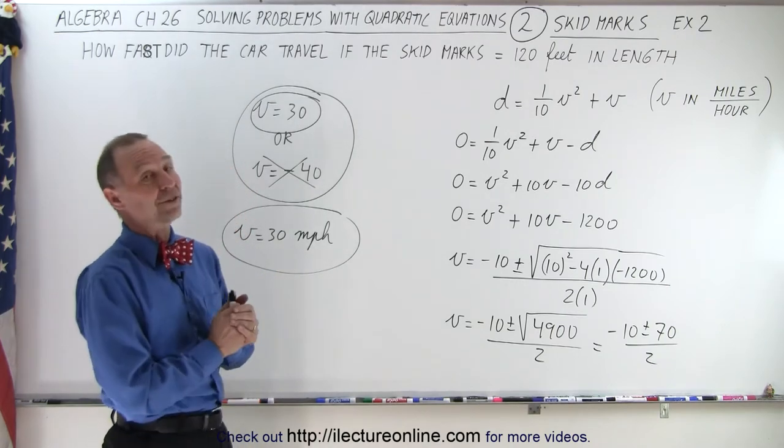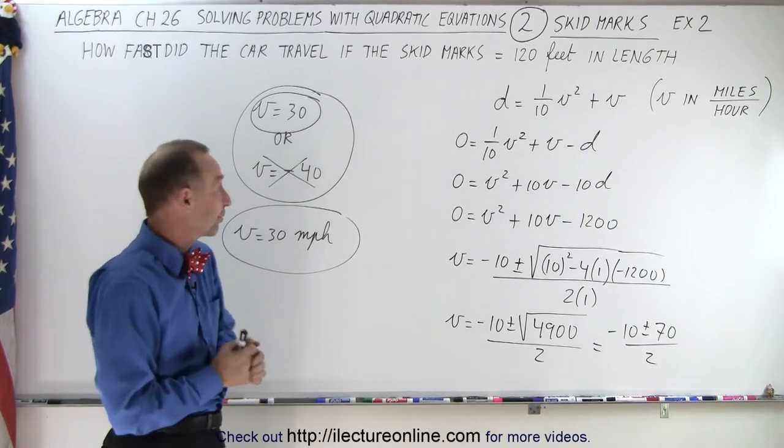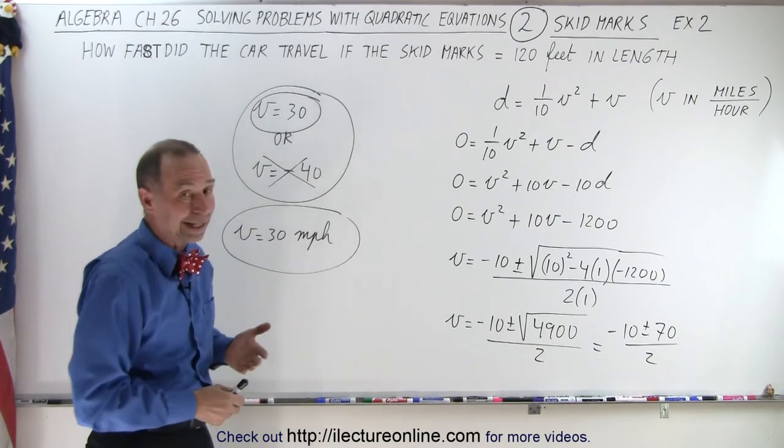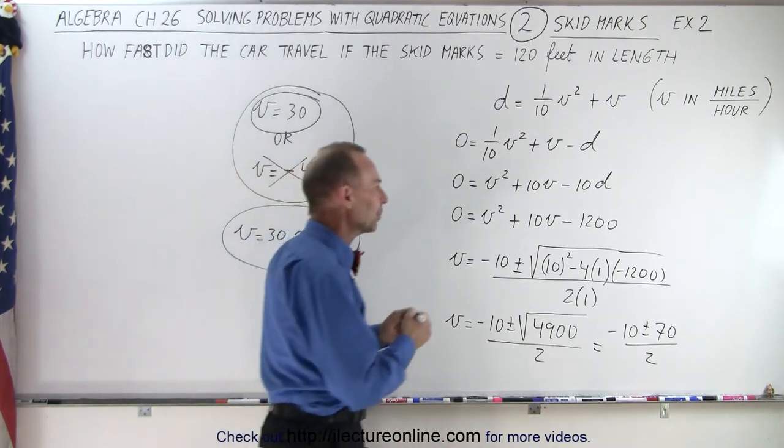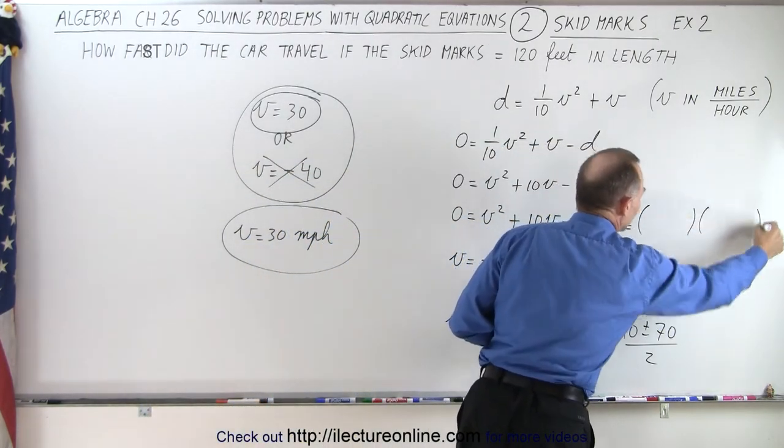Even though we use the quadratic equation because that always works we could have actually factored it. And of course with the answers it was clear that this was probably factorable. So how do we do that? Well we can say that this is going to be equal to the product of two binomials.